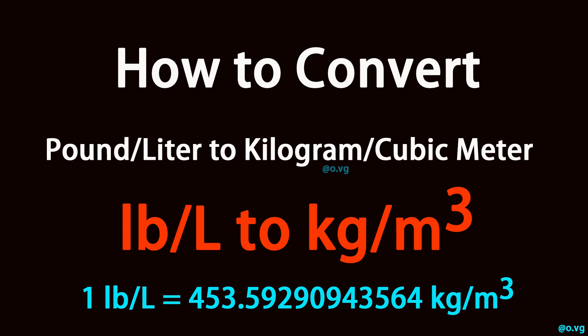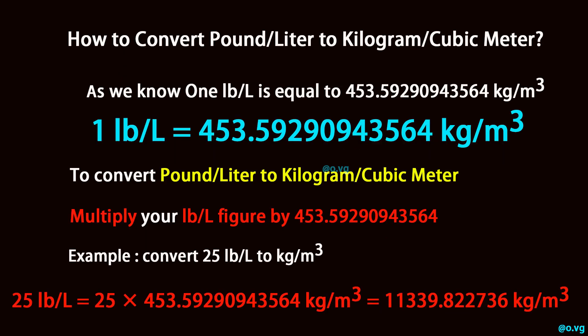How to convert pound per liter to kilogram per cubic meter? As we know, 1 pound per liter is equal to 453.59290943564 kilogram per cubic meter.